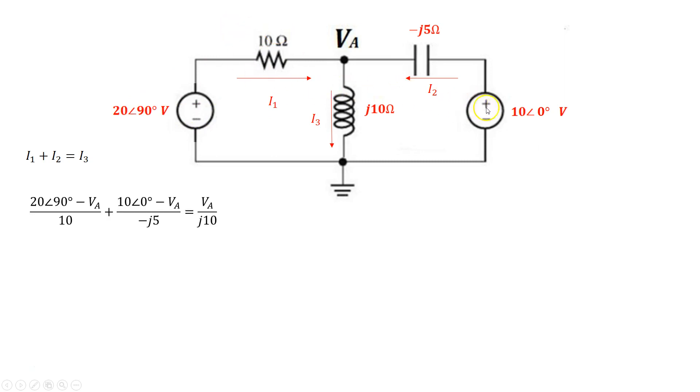Similarly, I2 is flowing from 10 angle 0 towards VA. So 10 angle 0 minus VA divided by the impedance of the capacitor right here. So minus j5. And the final current I3 is flowing from VA towards ground. So VA minus 0 divided by j10.